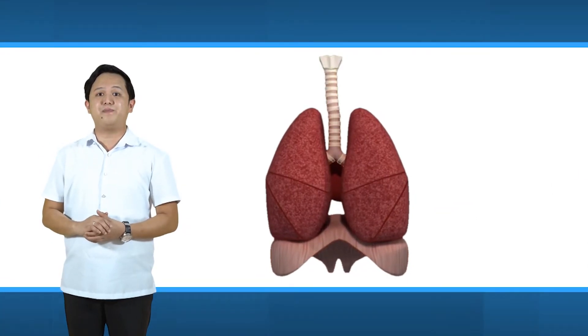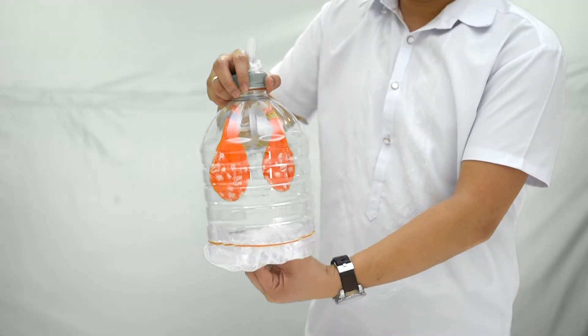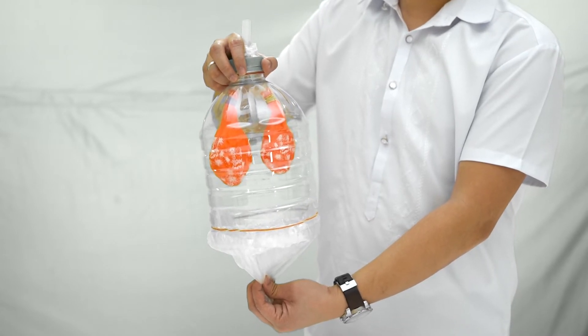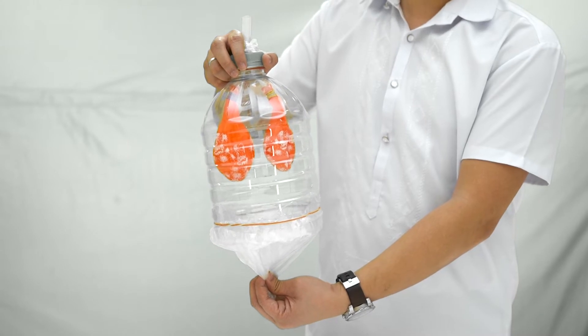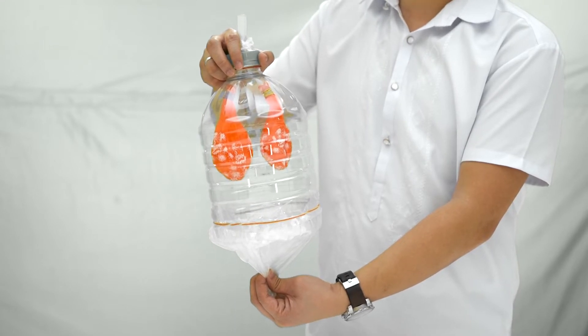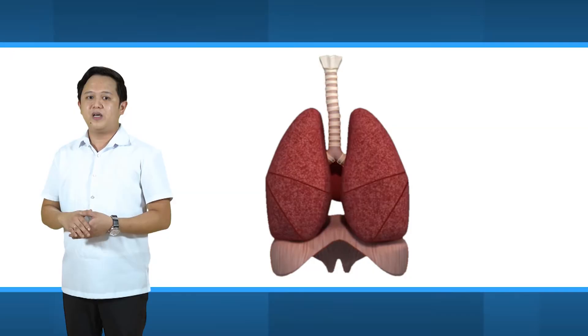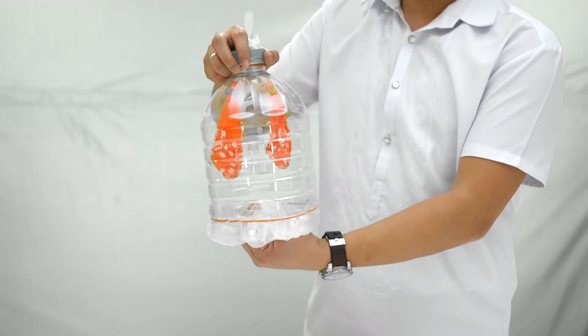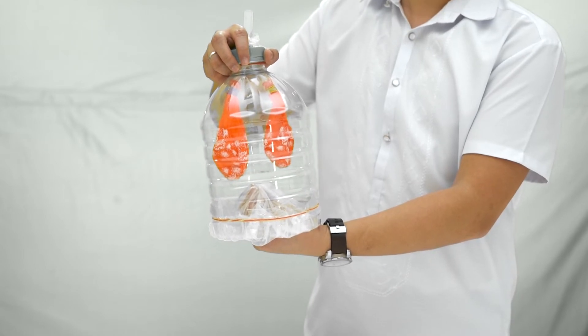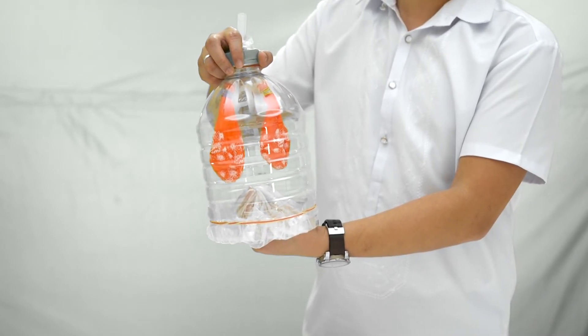When we pull down the plastic sheet, the air pressure inside the bottle decreases while the volume of the bottle increases. This reduced pressure causes outside air to enter the balloons. When the plastic sheet is pushed up, the volume of the bottle decreases and air pressure inside increases. This increased pressure forces air out of the balloons.